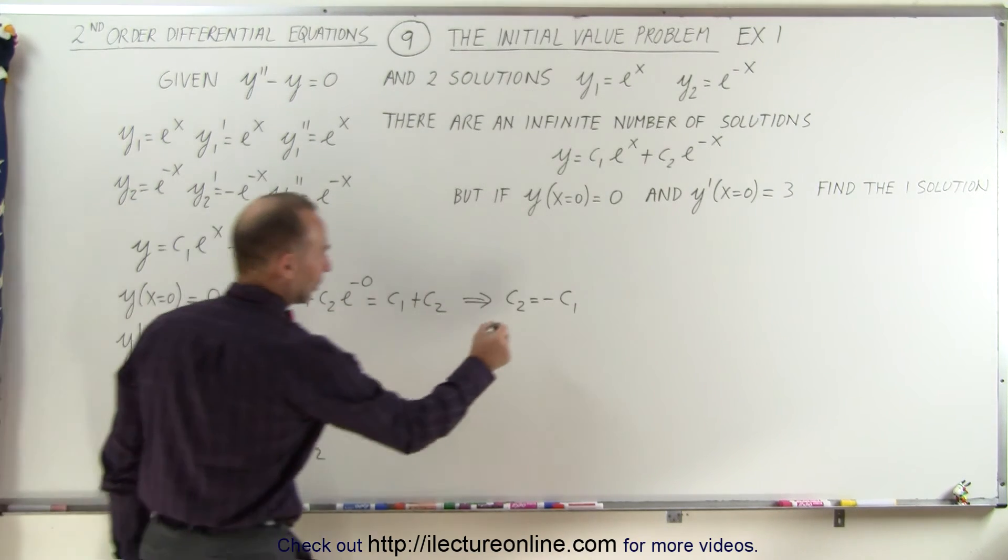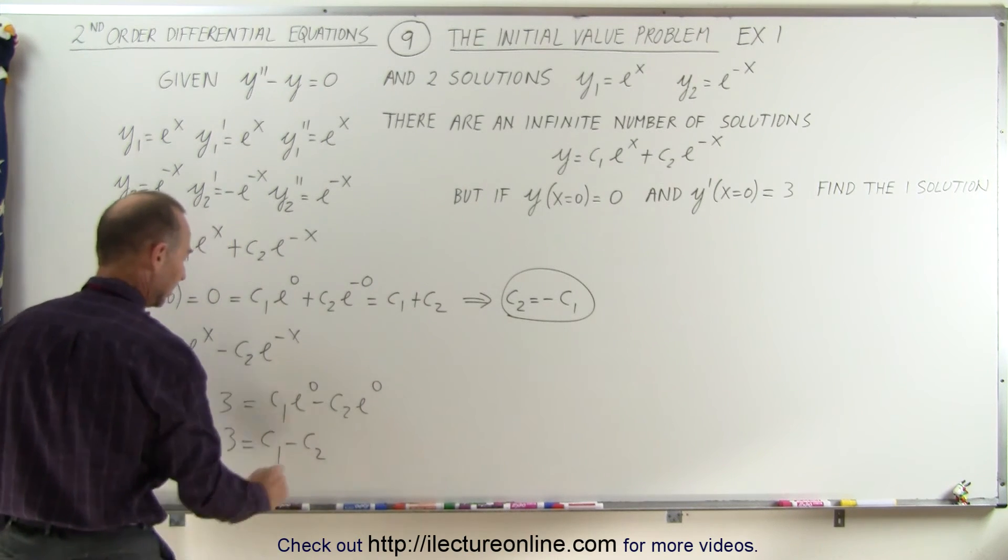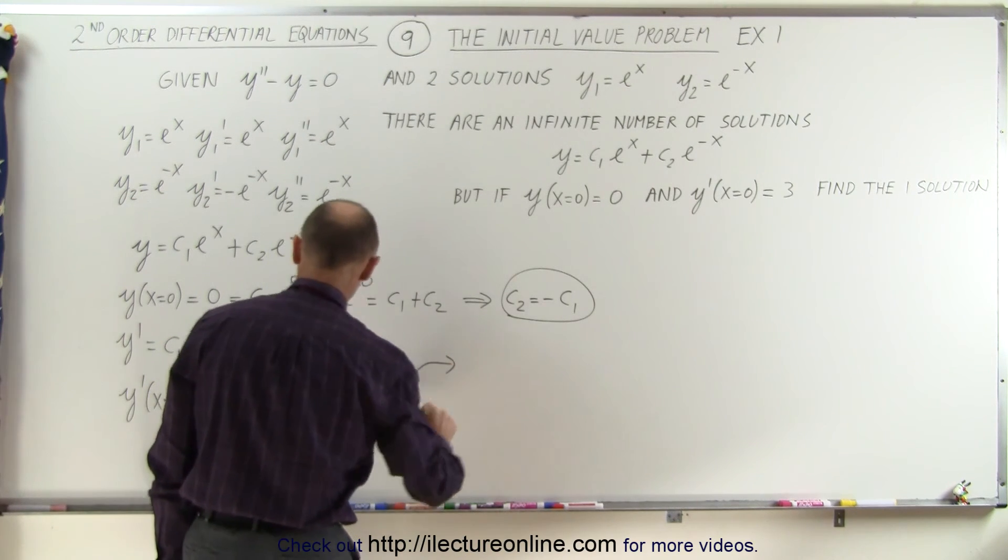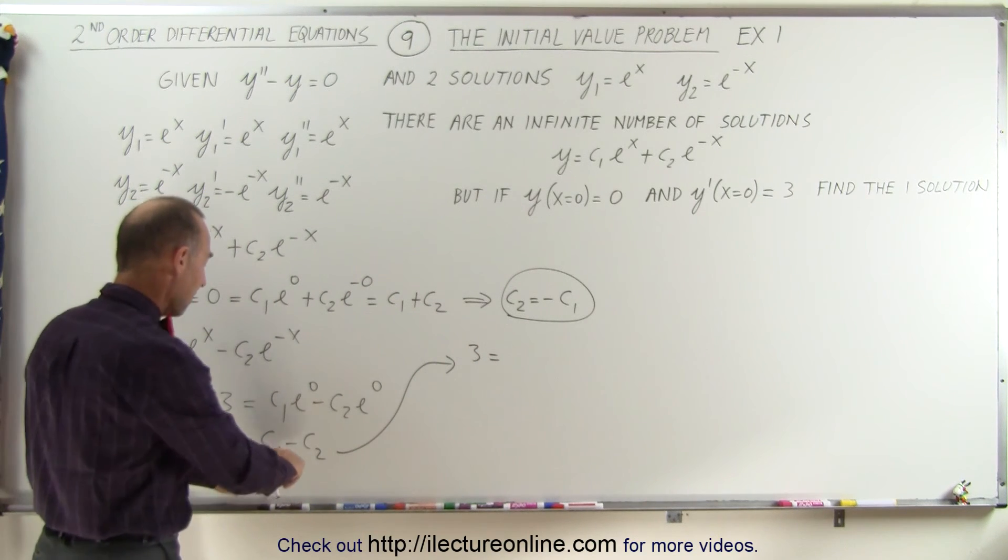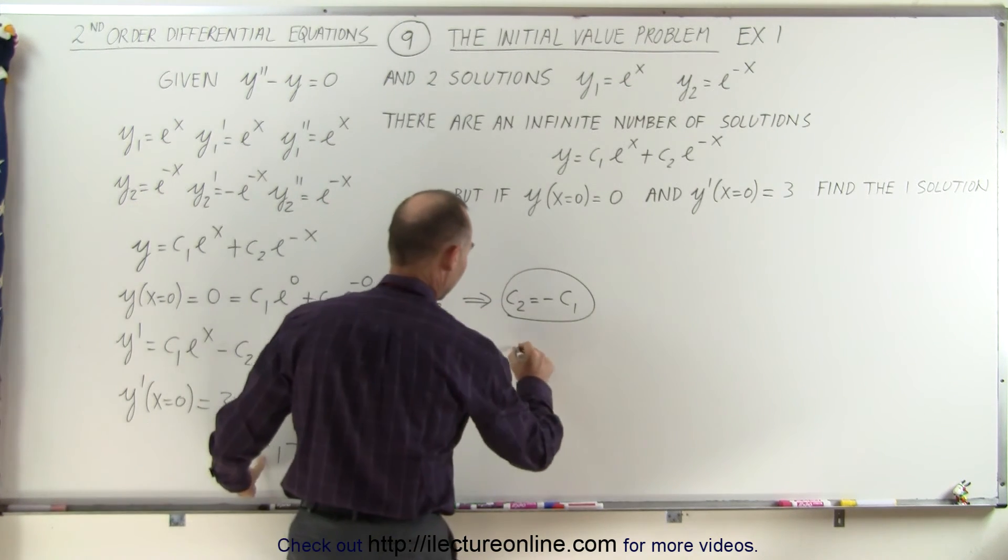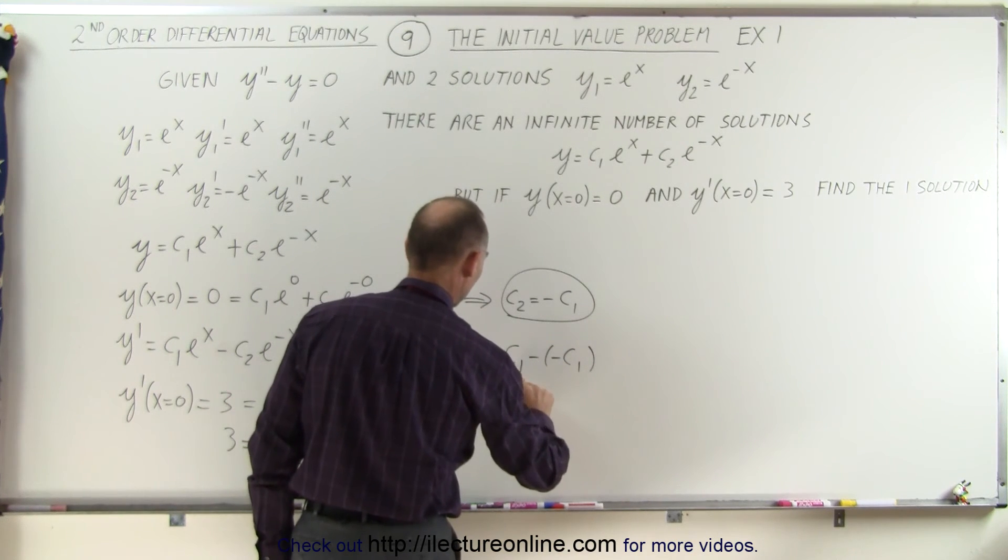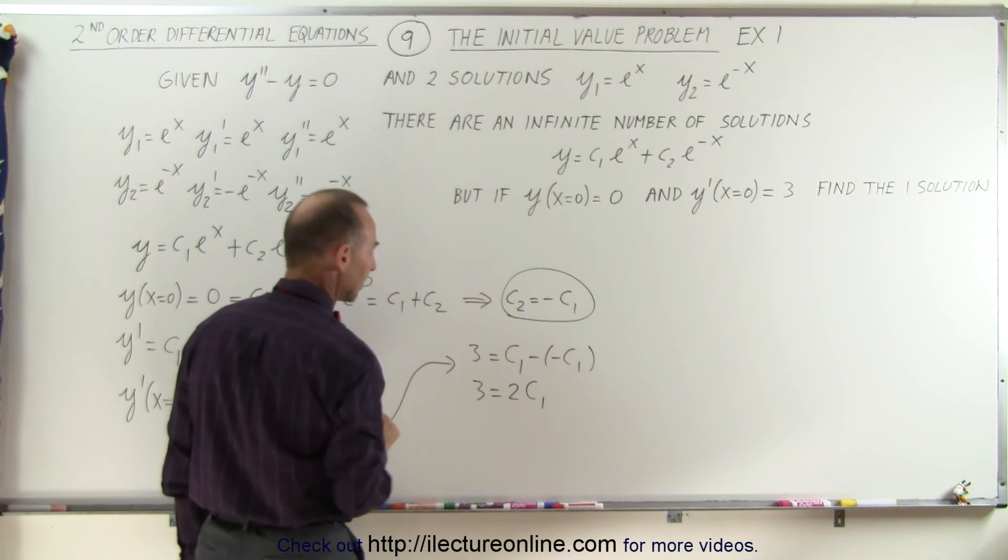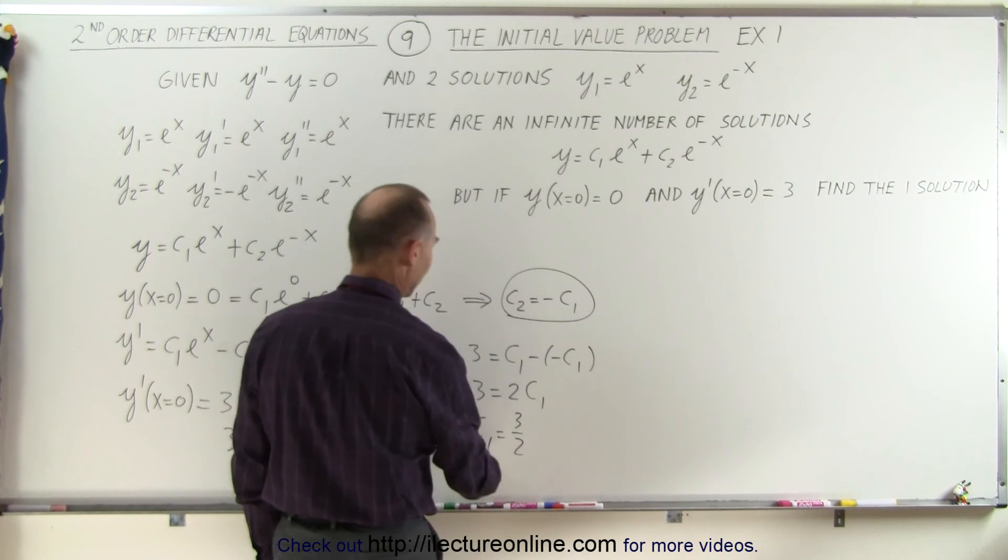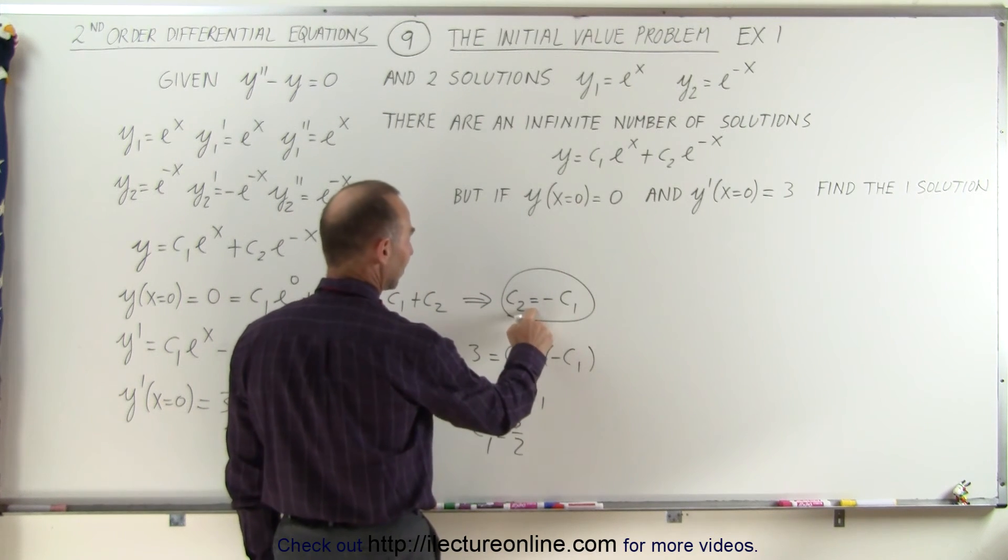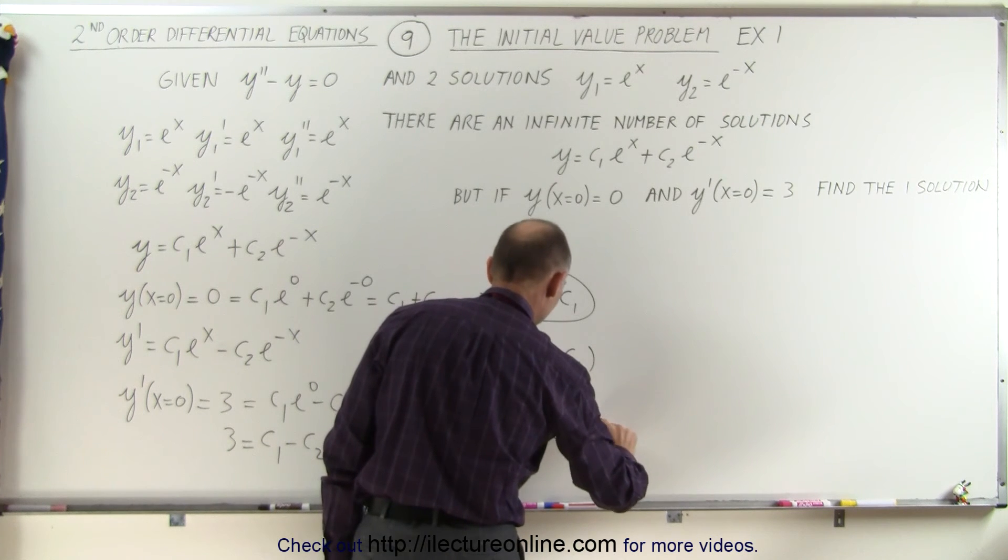But since I already have a relationship between the two constants, c2 equals negative c1, I can plug that in here. And so that means I can now write that 3 is equal to c1 minus negative c1, or 3 is equal to 2c1, which means that c1 is equal to 3 halves. And if c1 is equal to 3 halves, then c2 is the negative of that, so c2 is equal to negative 3 halves.